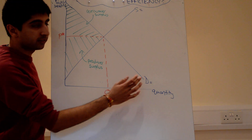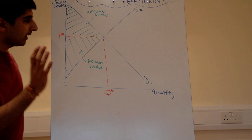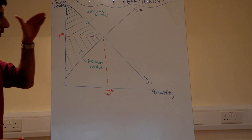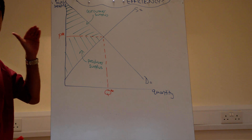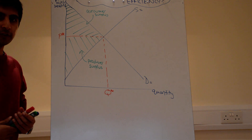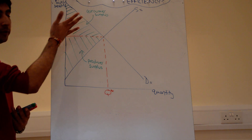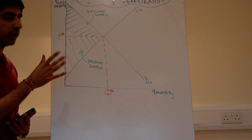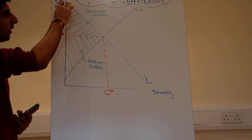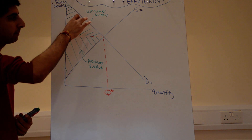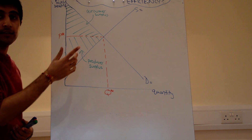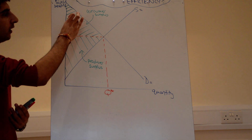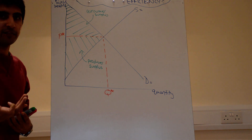Let's isolate the demand curve and actually understand what's going on in relation to it. At price P star, we know from the demand curve that there are several consumers that would have been willing to pay higher prices. Because they pay only P star instead, they benefit. So the consumer surplus gives a measure of benefit.